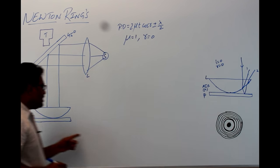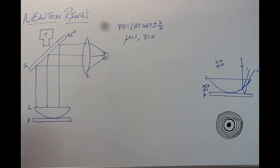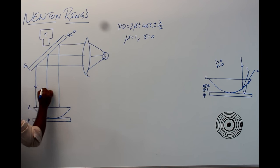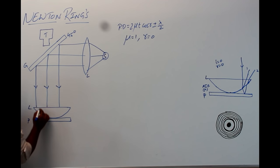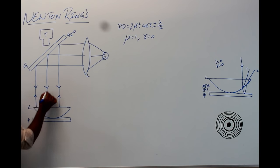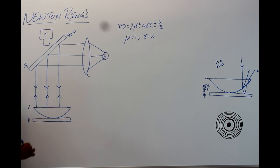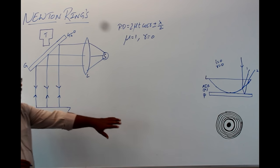Since light rays are incident on the plano-convex lens normally, the same rays will reflect back and both get superimposed, giving alternative bright and dark rings.